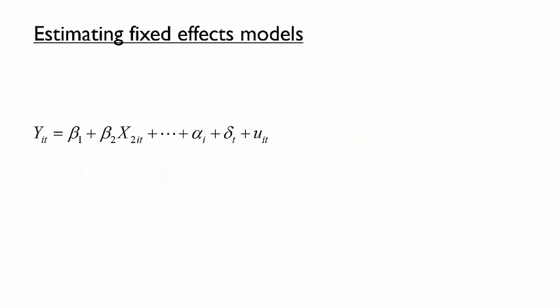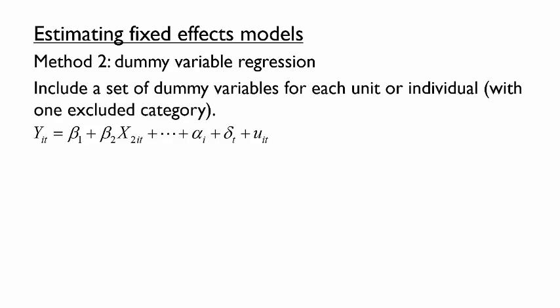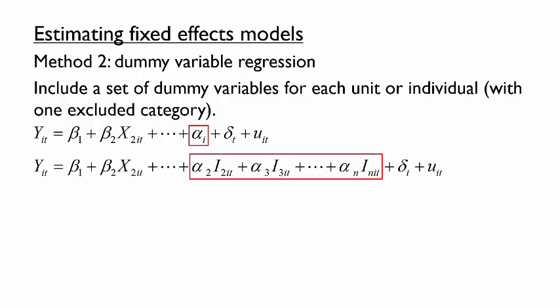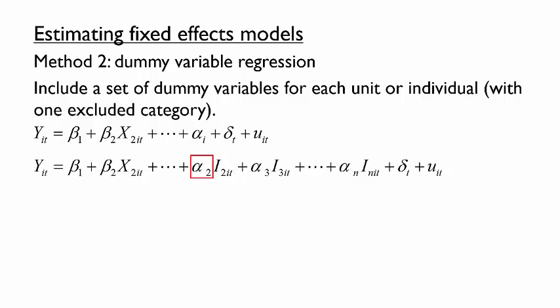The second method for estimating fixed effects models is a dummy variable regression. Here, we include in an OLS regression a set of dummy variables for each unit or individual with one excluded category. The idea is simple if you remember how dummy variables work: the alpha_i term really just means that each individual or other unit in the sample is allowed to have a different intercept. We have allowed different groups to have different intercepts by adding a series of dummy variables to the model. For instance, the dummy variable i2 equals 1 if the observation describes individual 2 and 0 otherwise. The parameter alpha_2 describes the difference in intercepts between individual 2 and the omitted category — in this case individual 1. It may be worth noting that we can include the time trend as a separate set of dummy variables as well. Although this procedure differs from the within-group fixed effects model, the mathematical result is the same.